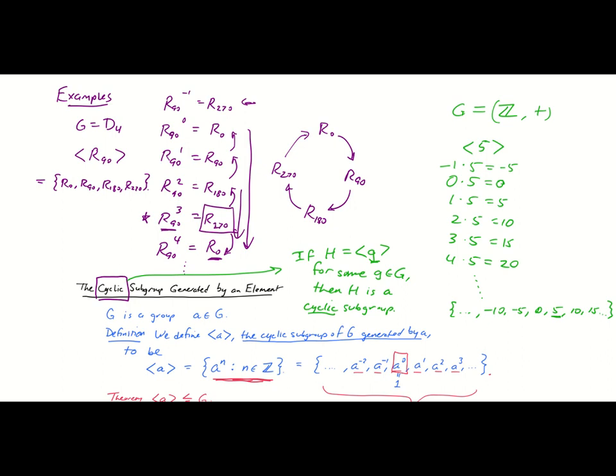And interestingly enough, D4 is not cyclic because there is no one element of D4 whose cyclic subgroup is all of D4. You will always get little pieces and parts, but you'll never get the whole thing with one generator. But actually this group over here, the group of integers with addition, this is a cyclic group. It's just not cyclic generated by five. It's cyclic generated by something else and that something else is one or in fact could be negative one.